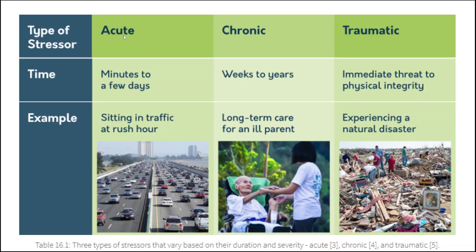Examples of stressor types: acute is a couple minutes to a couple days — like getting stuck in traffic. Chronic is weeks to years — such as having a long-term illness, or a partner who does. Traumatic involves immediate threat to physical integrity, like natural disasters. There's an entire field of psychology related to how people react to these extreme scenarios, which is why traumatic stressors are sometimes separated out as their own category for study.